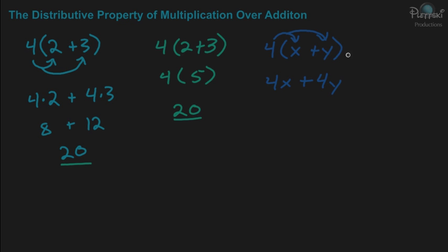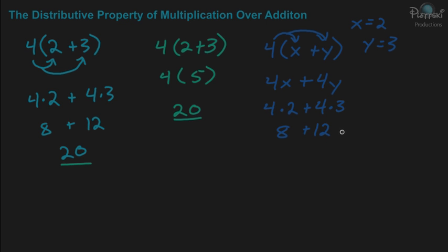And that's using the distributive property. Now if they told you that x equals 2 and y equals 3, then you can evaluate it at this point. It would be 4 times x, which is 2, plus 4 times y, which is 3. So you would get 8 plus 12, which equals 20.